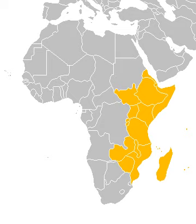Eastern Africa had an estimated population of 260 million in 2000. This was projected to reach 890 million by 2050, with an average growth rate of 2.5% per annum. The 2000 population is expected to quintuple over the course of the 21st century to 1.6 billion as of 2100. In Ethiopia, there is an estimated population of 102 million as of 2016.